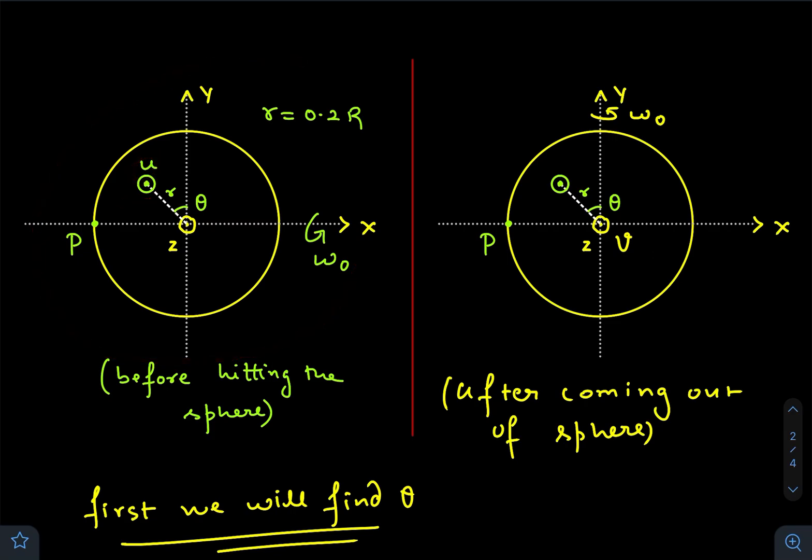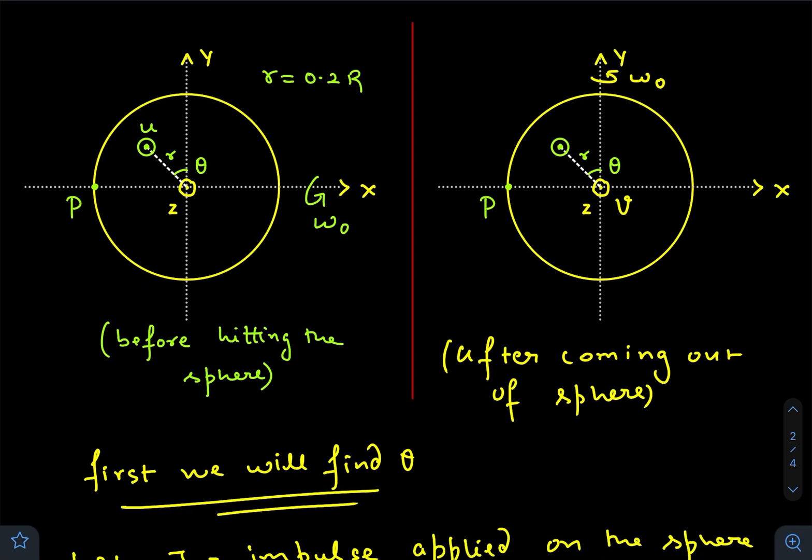Just before hitting, u is the velocity of the bullet of mass m, of course, and the sphere is rotating with an angular velocity ω₀ with respect to the x-axis. This is point P. Now just after the collision, after the bullet comes out of the sphere, the velocity of the bullet becomes zero.